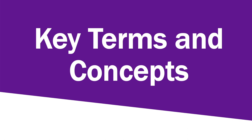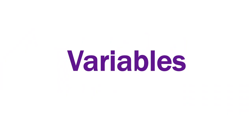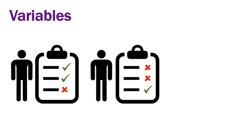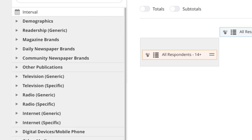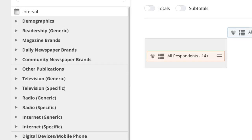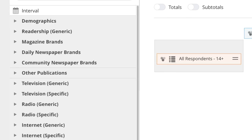Let's look at some of the key terms and concepts in Vividata. The survey responses in Vividata are referred to as variables, because the answers that respondents give to a question will change from person to person. The variables are grouped into categories.